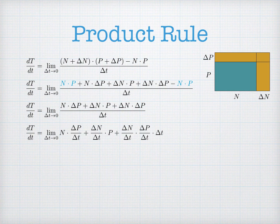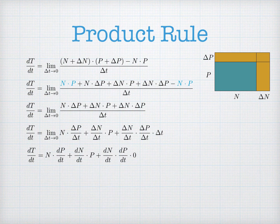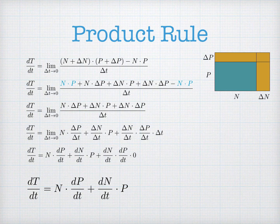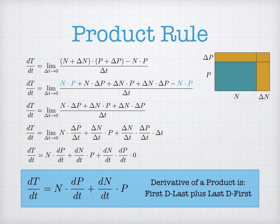When I simplify and group them as three different terms, I see difference quotients appearing that when I take a limit, I'll get derivatives. The rate of change of the total is the Nutella amount per pancake times the rate of change of my pancake eating, plus the rate of change of my Nutella usage times the number of pancakes. The product of the rates times zero cancels. So the product rule gives us: the derivative of t is n times the derivative of p plus the derivative of n times p. In summary, the derivative of a product is the first times the derivative of the last plus the last times the derivative of the first — or 'firsty last plus lasty first,' which is a much more fun way to say it.